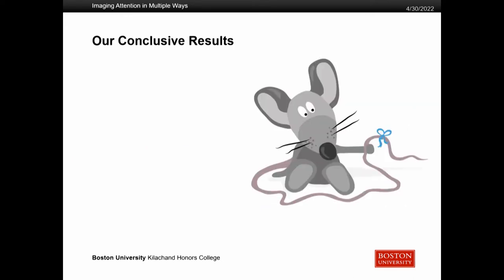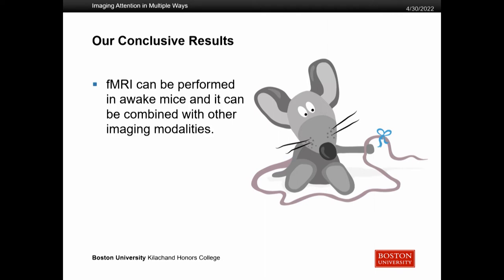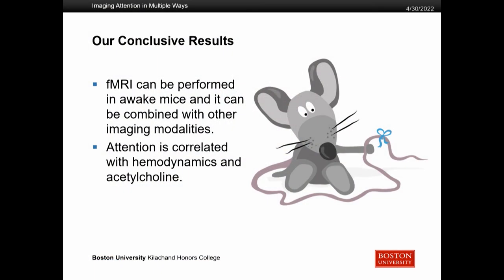What do these results really mean? First of all, we can do this fMRI study in an awake mouse and it can be combined with other imaging modalities like acetylcholine. At the same time, we can now say definitively that attention is correlated with hemodynamics and acetylcholine, which is something that was long assumed but never really specifically studied.